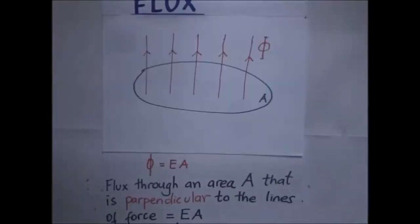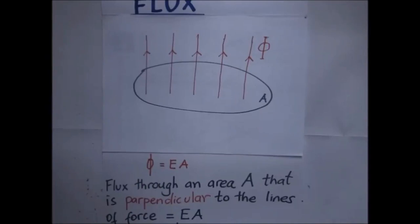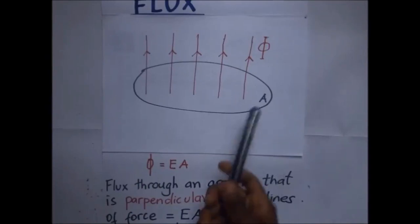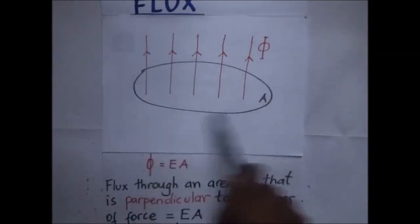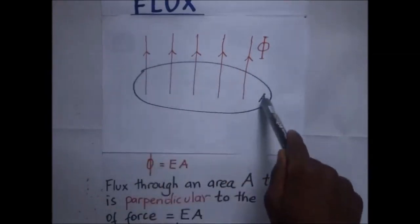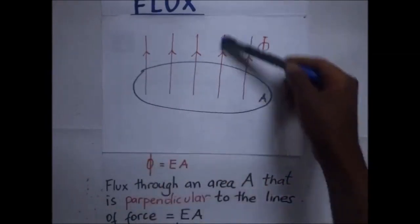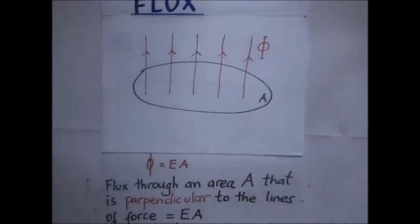Electric flux, according to electromagnetism, refers to the measure of flow of the electric field through a given area. It is directly proportional to the number of electric field lines going through a perpendicular surface. Looking at the illustration on screen, we have a surface with area A and some lines going through it — these are the electric field lines.